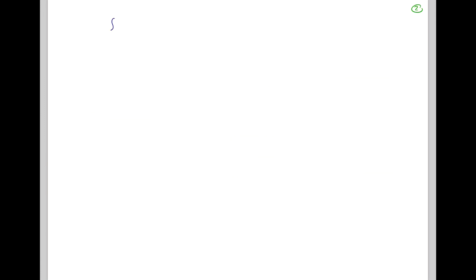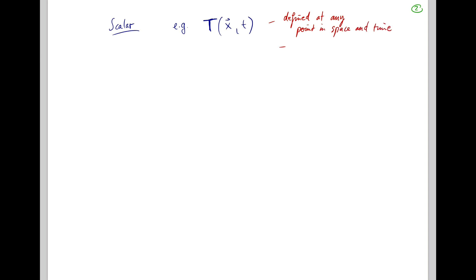What is a scalar? For example, let's take the scalar temperature field T, which is a function of x, the position, and time t. Temperature T is defined at any point in space and time, and it only has a magnitude — a value, a number that describes how large it is — and it has no direction. This is what sets it apart from a vector.